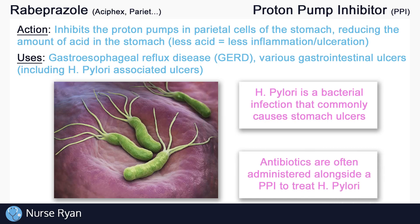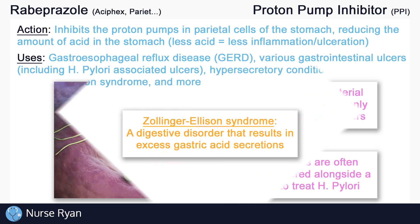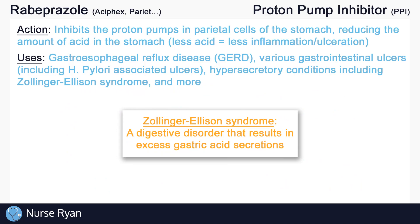In the event of an H. pylori infection, antibiotics are often administered alongside a proton pump inhibitor to actually treat the infection. Rabeprazole can also be used for hypersecretory conditions, including Zollinger-Ellison syndrome, which is a digestive disorder that results in excess gastric acid secretions, and more.